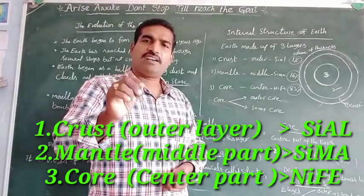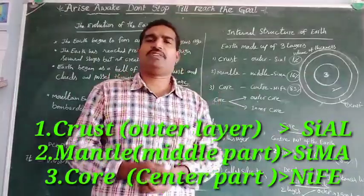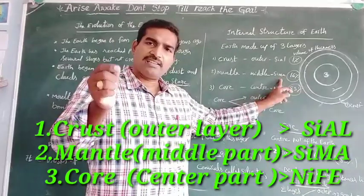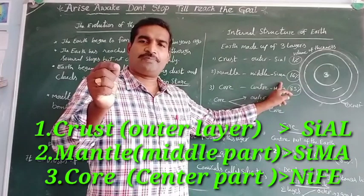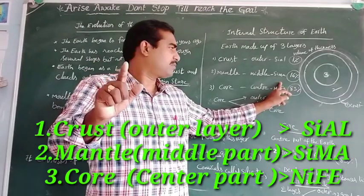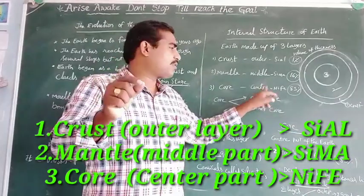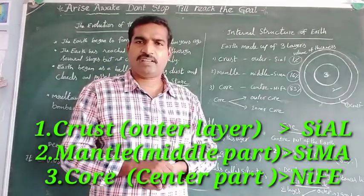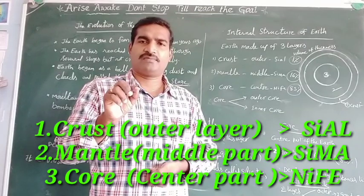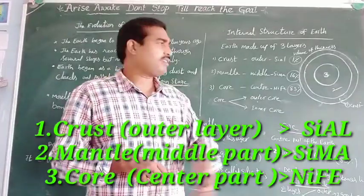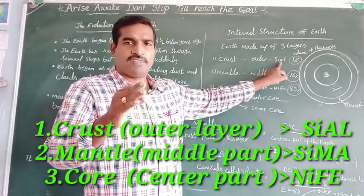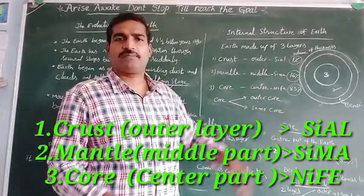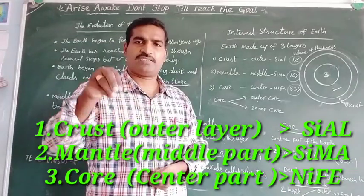What materials are in each layer? In the earth crust, SIAL is there — SIAL means silicon and aluminum. In the mantle, it consists of SEMA — SEMA means silicon and magnesium. In the core, the substances are nickel and ferrous, also called NiFe. So the three names to remember are: SIAL for the crust, SEMA for the mantle, and NiFe for the core.